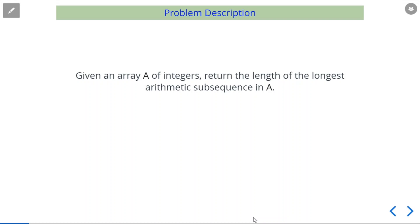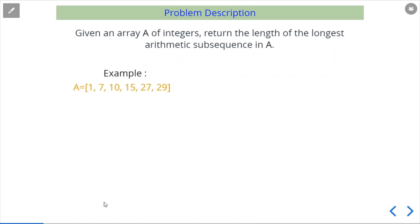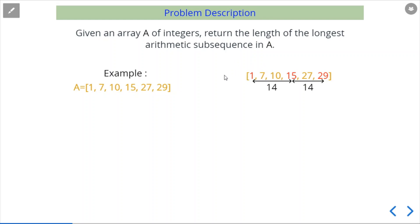The problem description is that we have been given an array A of integers and we need to return the length of the longest arithmetic subsequence in A. For example, given the array [1, 7, 10, 15, 27, 29], we can see there is an arithmetic subsequence of 1, 15, and 29, because the difference between 1 and 15 is 14, and the difference between 15 and 29 is also 14. So the difference is common throughout, and hence it is an arithmetic subsequence.